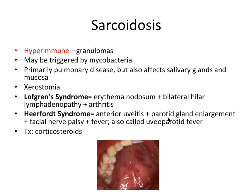Next we have sarcoidosis, which is hyperimmune, meaning it involves granulomas. The immune system is over-responding to some stimulus. Sarcoidosis may be triggered by mycobacteria, which is also the etiologic agent for tuberculosis. Primarily it's a pulmonary disease but it also affects the salivary glands and mucosa. Since it's affecting the salivary glands, it results in xerostomia — dry mouth — which is probably the most important component of sarcoidosis, because dry mouth has serious side effects for oral health in terms of a higher caries risk.